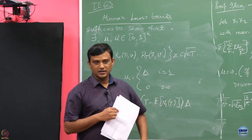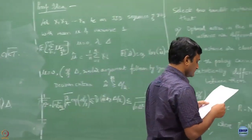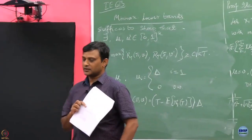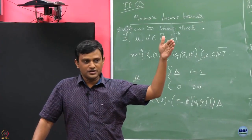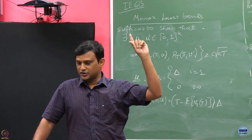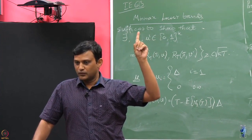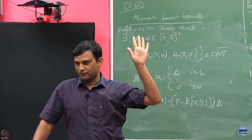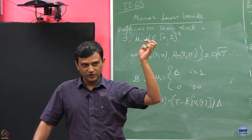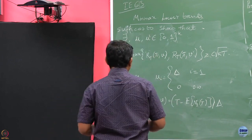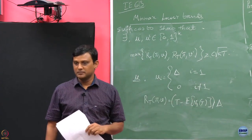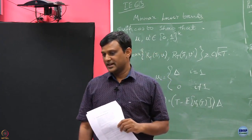This is the total regret if you have this problem instance, with total number of rounds being capital T. Then the claim is there should be at least one arm which would have been played less than T/K number of rounds. By the pigeonhole principle we are just going to apply that. So one of the arms, not the optimal arm, there should be one arm which is played at most T/K rounds.